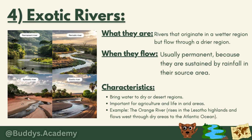The last river type is the exotic river. Exotic rivers originate in wetter regions but flow through a drier region — so if region A is wet and receives a lot of rainfall, that water flows from region A into drier region B, making it an exotic river. They are usually permanent because they are sustained by rainfall in their source area, bringing water to dry or desert regions — important for agriculture and life in arid areas. An example is the Orange River, which rises in the Lesotho Highlands and flows west through dry areas to the Atlantic Ocean.